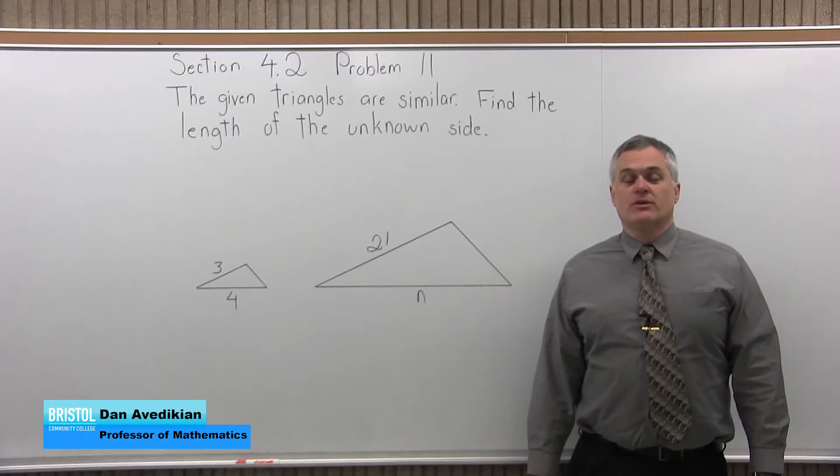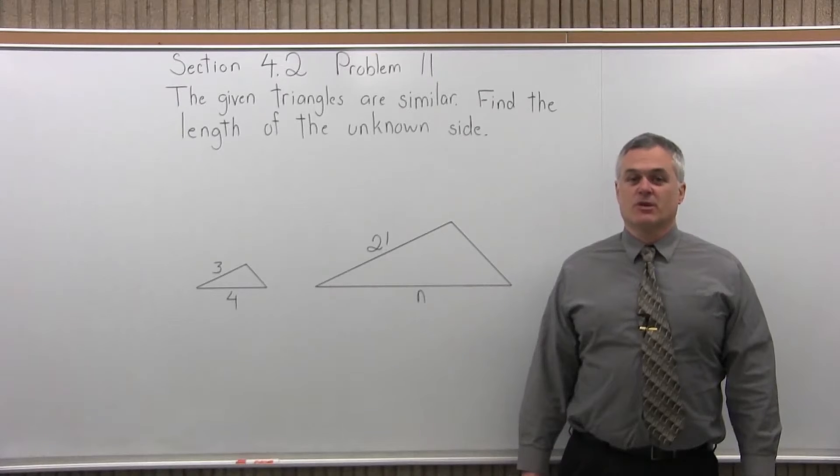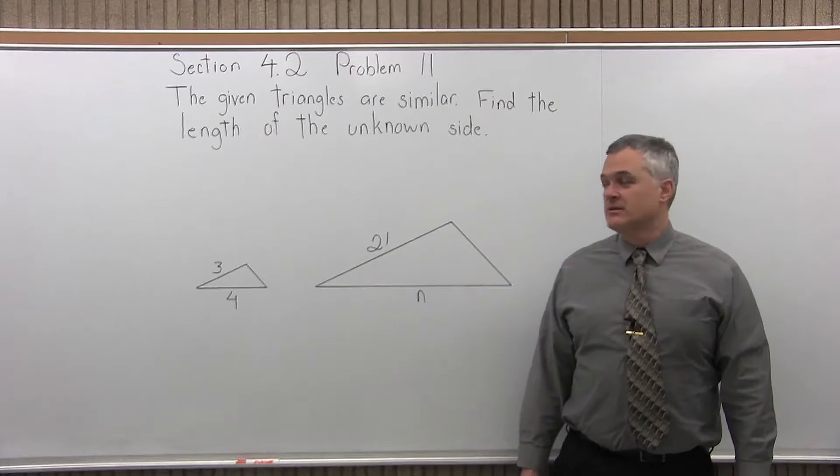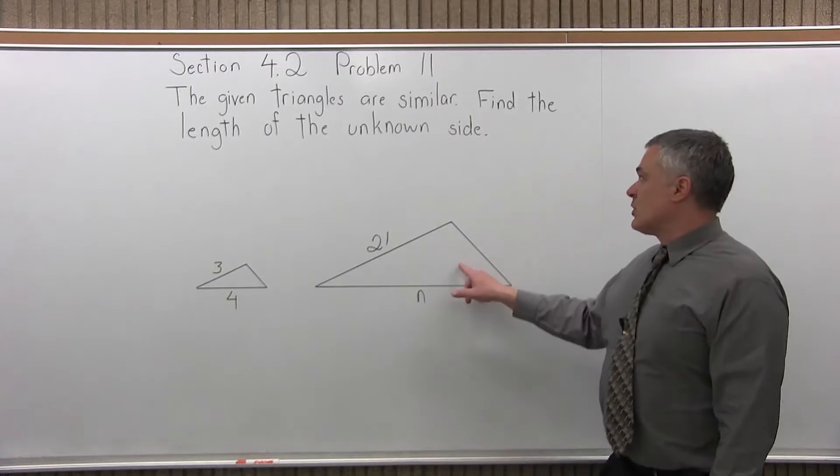This is Section 4.2, Number 11. It says the given triangles are similar, find the length of the missing side or the unknown side.